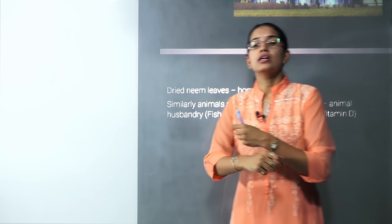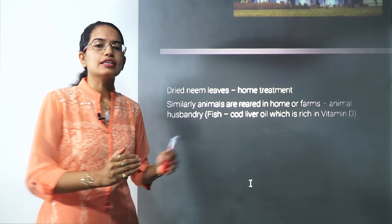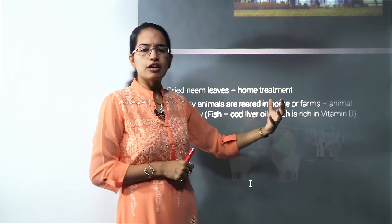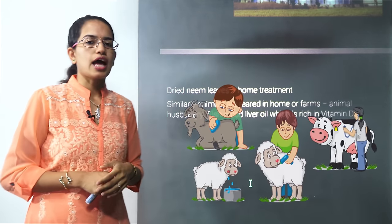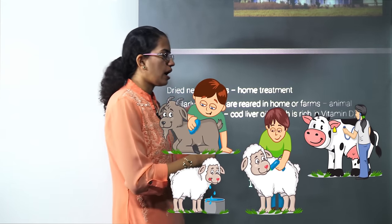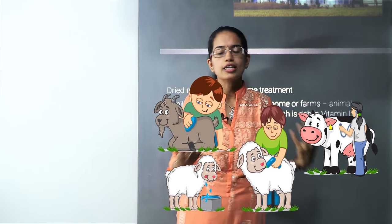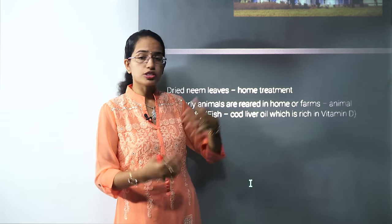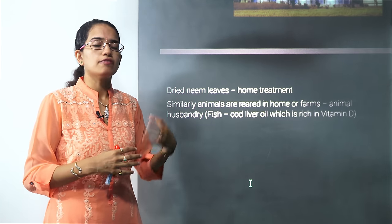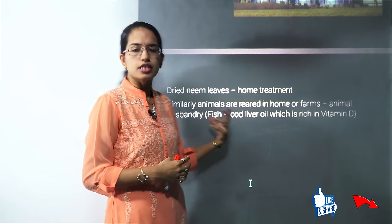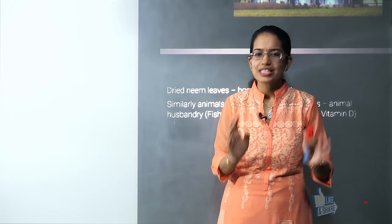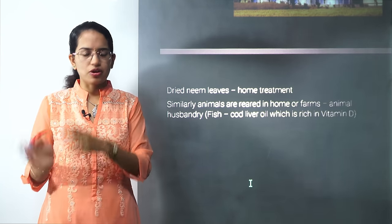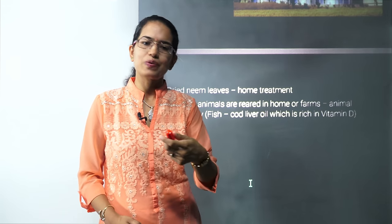Any farmland also has animals along with it, such as milch animals. The art of rearing and taking care of animals is called animal husbandry. Under animal husbandry various bovines are included. From fish, for example, cod liver oil from cod fish is a rich source of Vitamin D. With this we cover our first lecture on this topic — we'll be back for the next round, so stay tuned and subscribe.